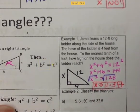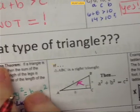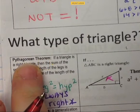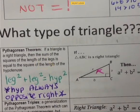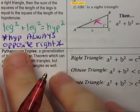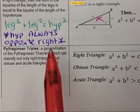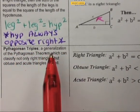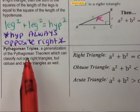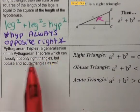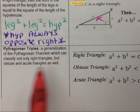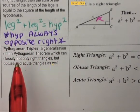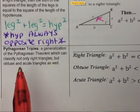That applies when your triangle is a right triangle. But what if it is a triangle but not a right triangle — how do you determine what kind it is? The Pythagorean theorem can be generalized to classify not only right triangles but also obtuse and acute triangles. You can use a variation of the Pythagorean theorem to determine what type of triangle you have.